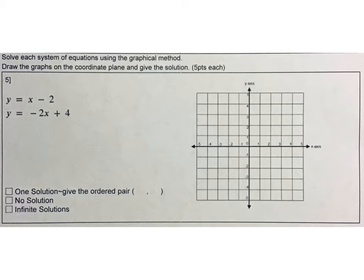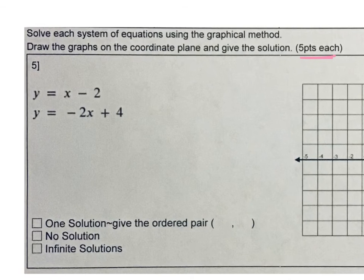For the next part, I'm noticing these are 5 points apiece, so let's be really careful and get all 5 points. We're going to graph the equations on the coordinate plane and give the solution. We need to go back and remember Y equals MX plus B.